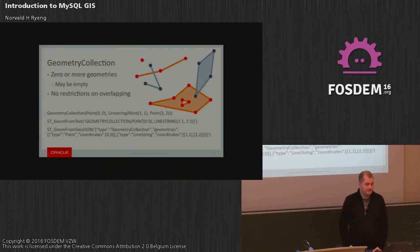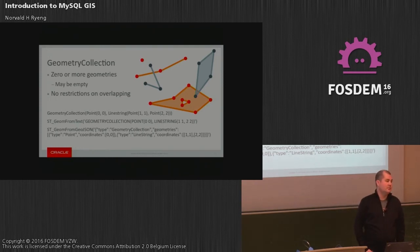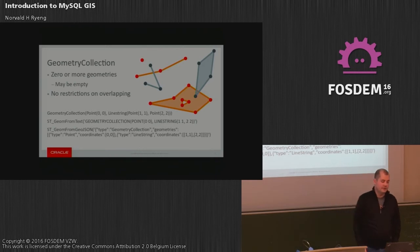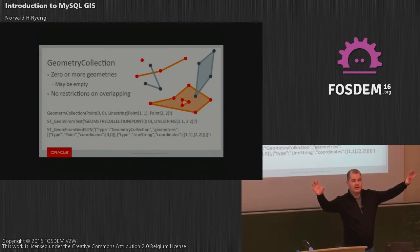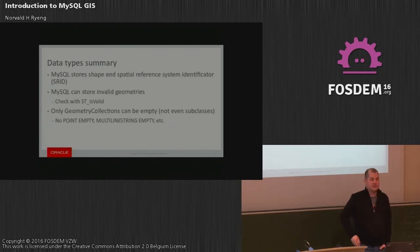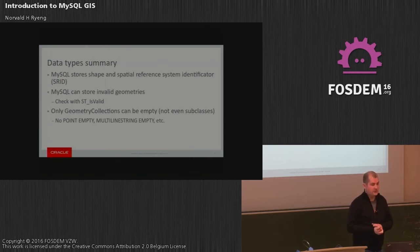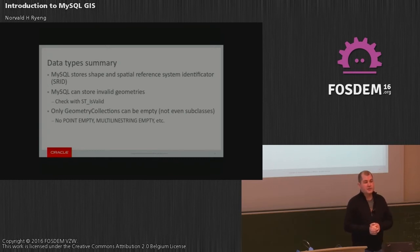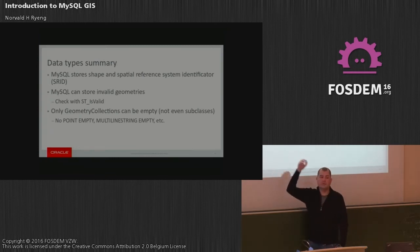Geometry collection is a generic collection that can contain anything. It can also be empty — this is the only type we allow to be empty. The OGC standards specify that any type could be empty, but currently we only allow geometry collection to be empty. So if you have two polygons and compute their intersection and there is none, you get an empty geometry collection as a result. To summarize: these types contain the geometry and the spatial reference system ID, stored binary in MySQL. All coordinates are double-precision. We can store invalid geometry, and if you're unsure, we have a function to check.